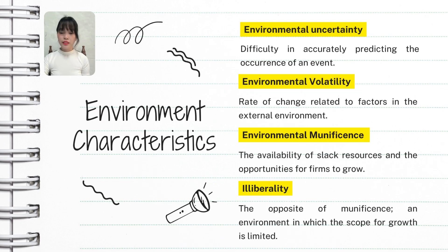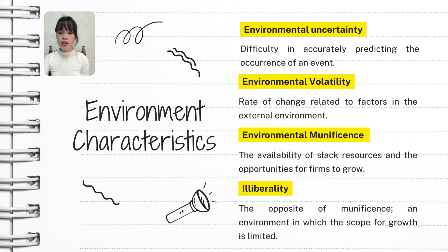Environment Characteristics. First is environmental uncertainty, which refers to the challenge of predicting what will happen in the future — how hard it is to foresee events or changes that could affect a business. For example, if a company cannot predict changes in consumer preferences or economic shifts, it faces uncertainty. Second is environmental volatility, which refers to how quickly things change in the external environment — the speed and frequency of changes that can impact a business. For example, if a tech industry sees rapid advancements and new trends popping up all the time, that's high volatility.